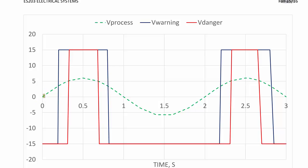Here is a graph of the results of the comparator we designed. The input V_process is a sinusoid with a 5 volt peak. When the sinusoid exceeds 3.5 volts, V_warning switches from 0 volts to 15 volts, the positive power supply. When the input exceeds 5 volts, V_danger — the red line — switches from negative 15 volts to positive 15 volts.